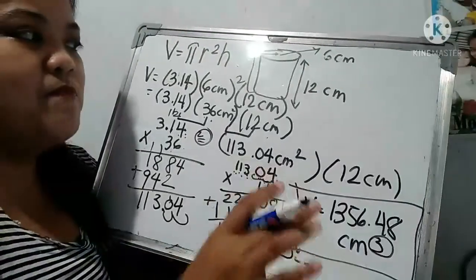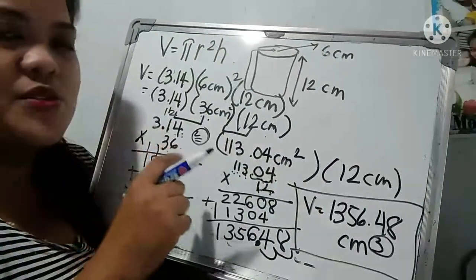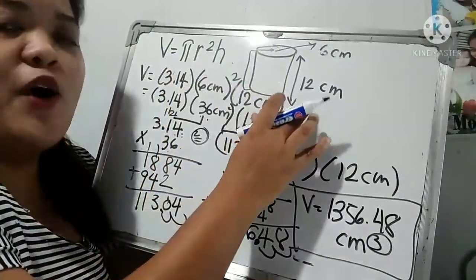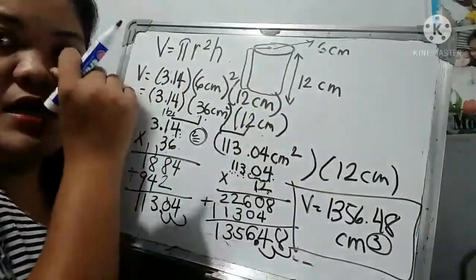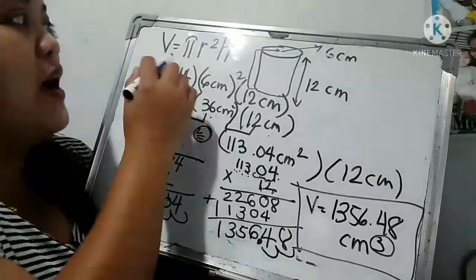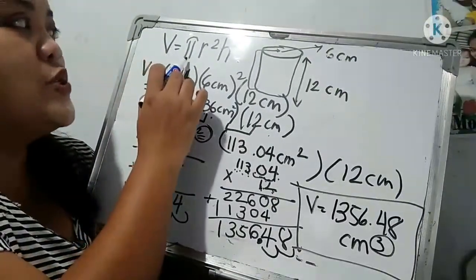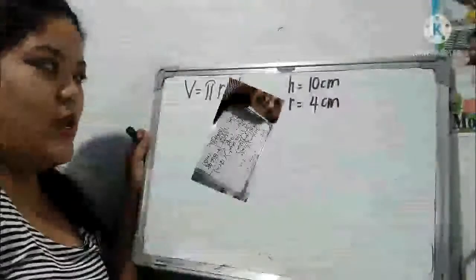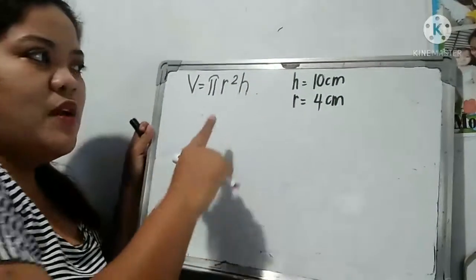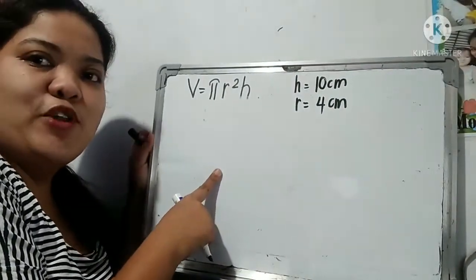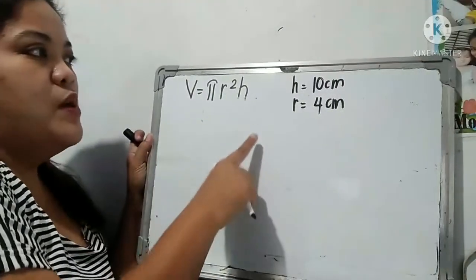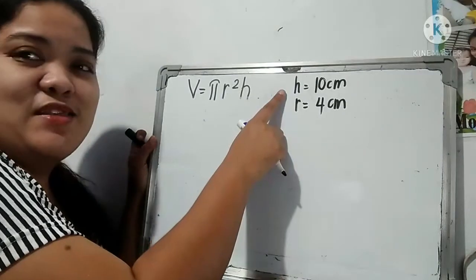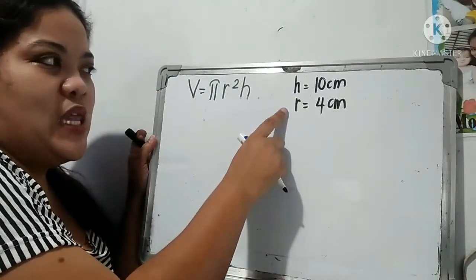Okay, so again, this is how to find the volume of the cylinder, having the formula of V equals pi R squared H. Okay, so another set of examples for the volume of cylinder. So we have the value of H which is 10 cm. And then we have...